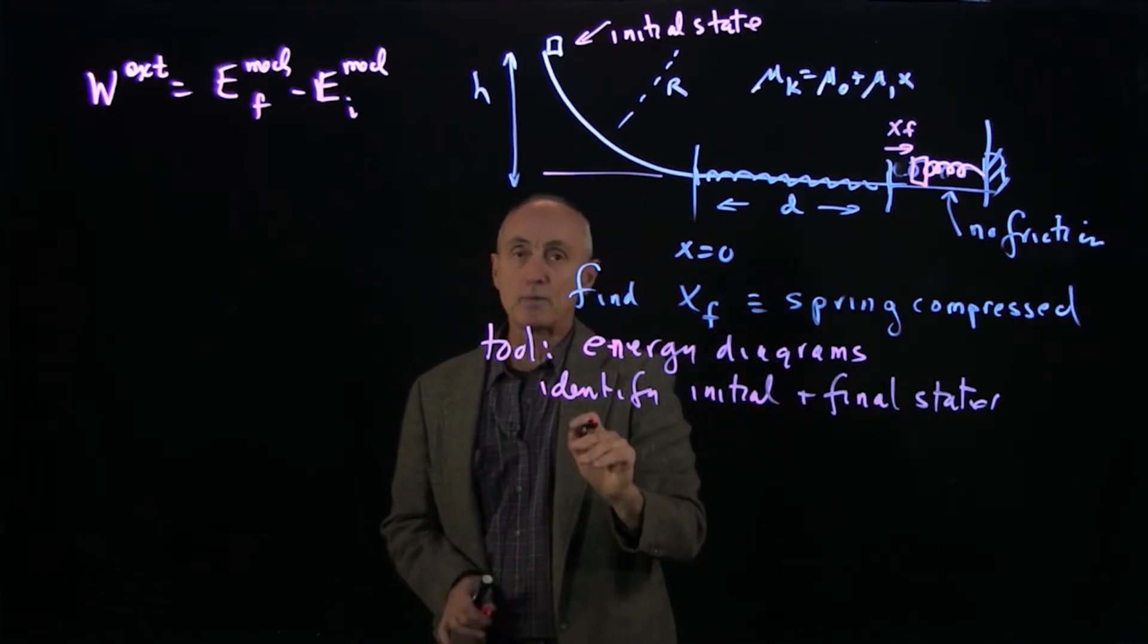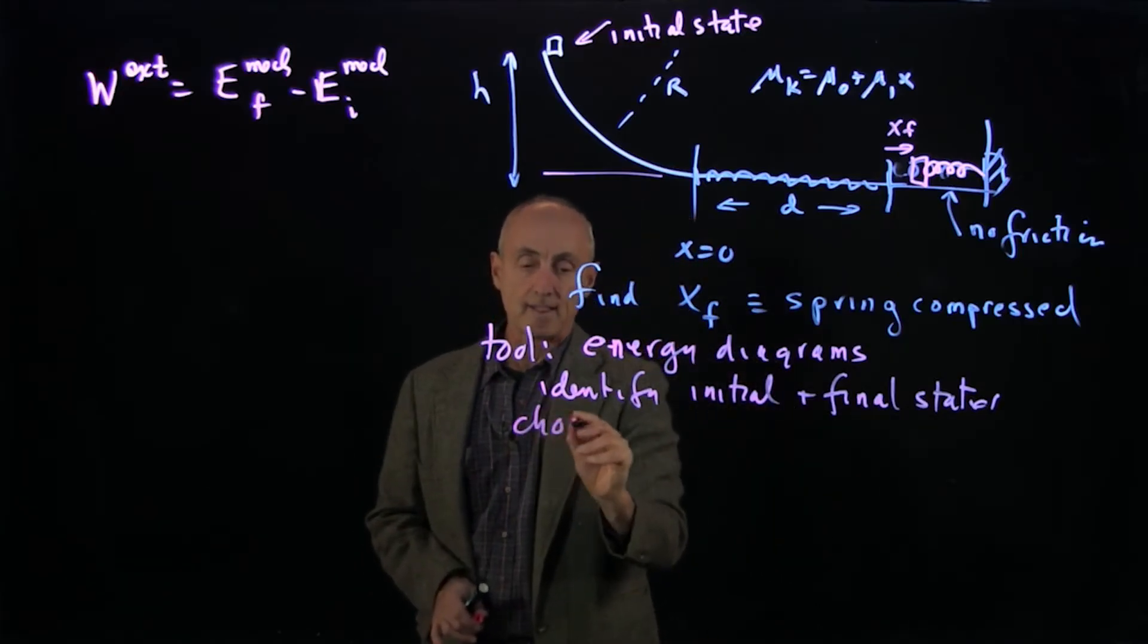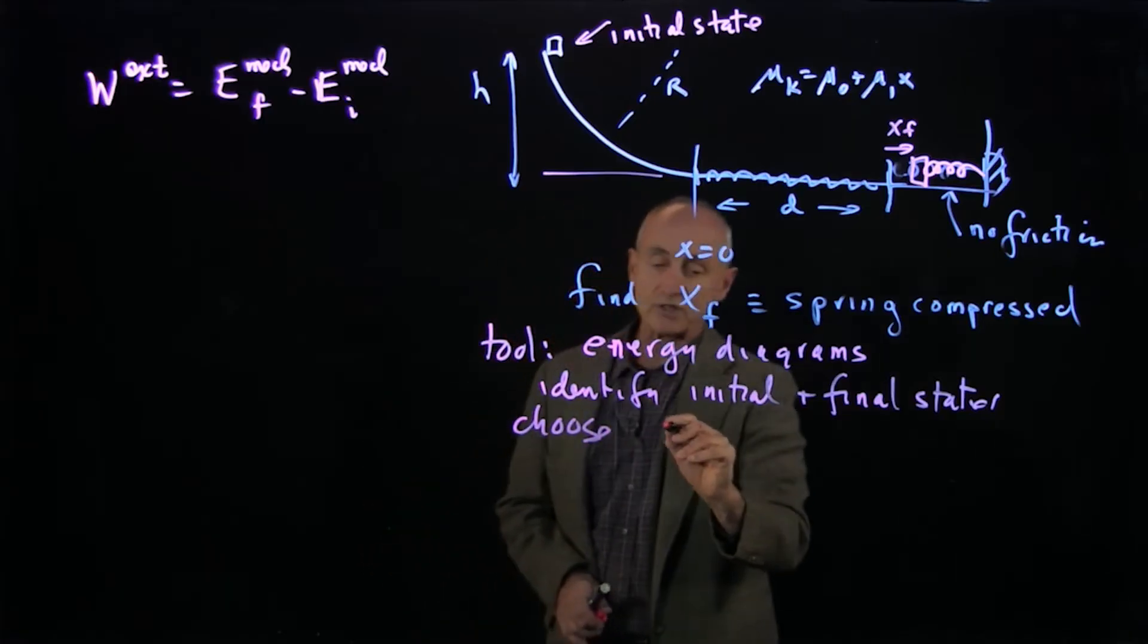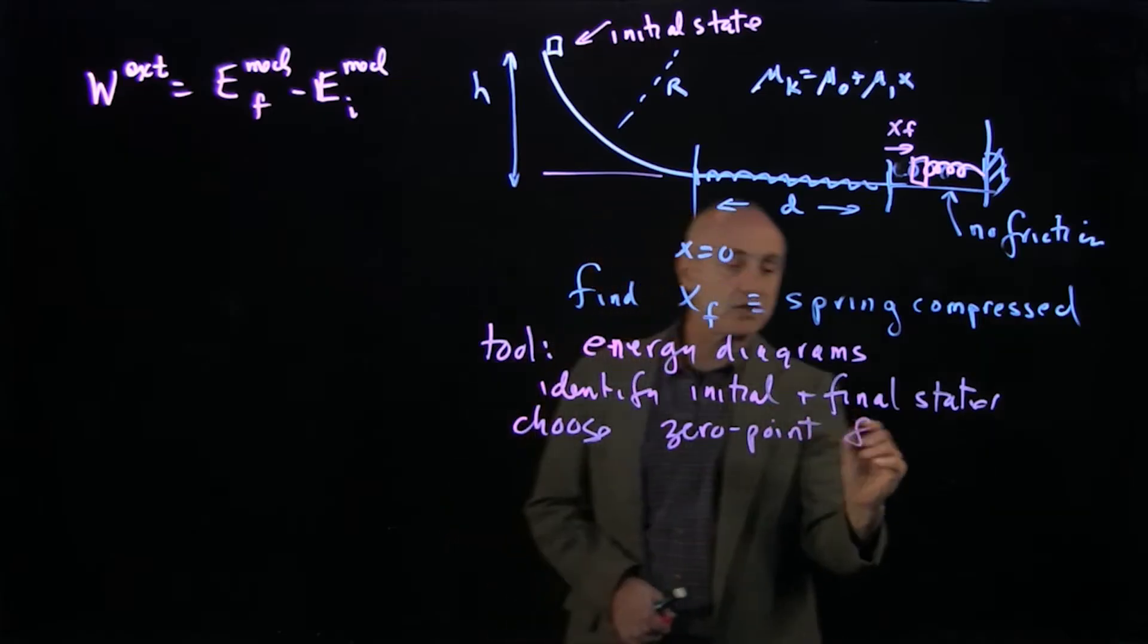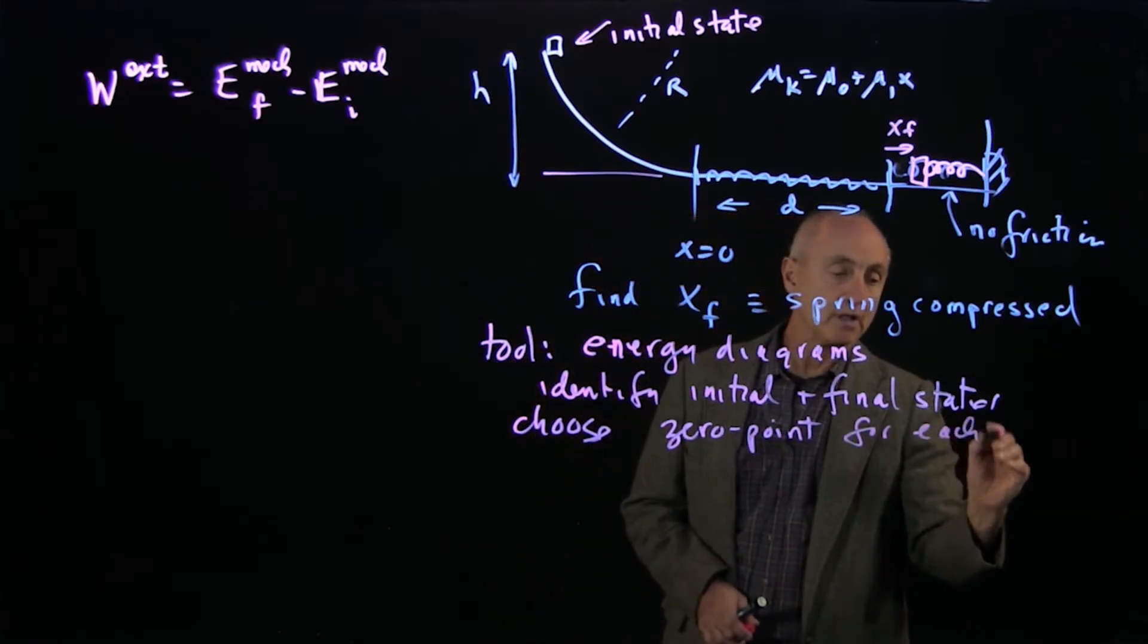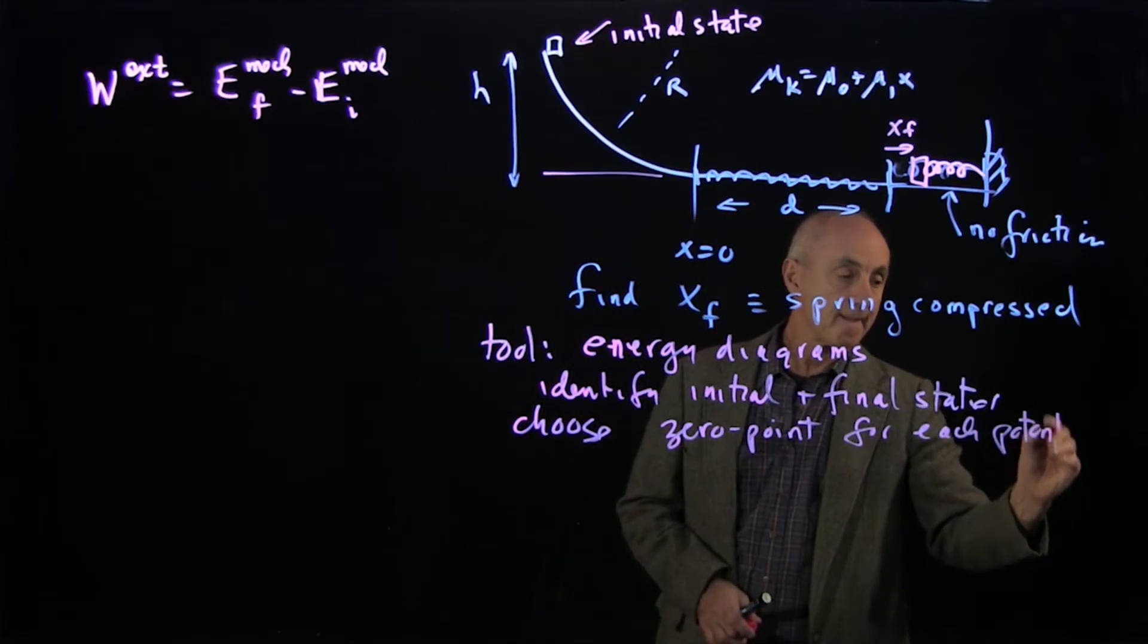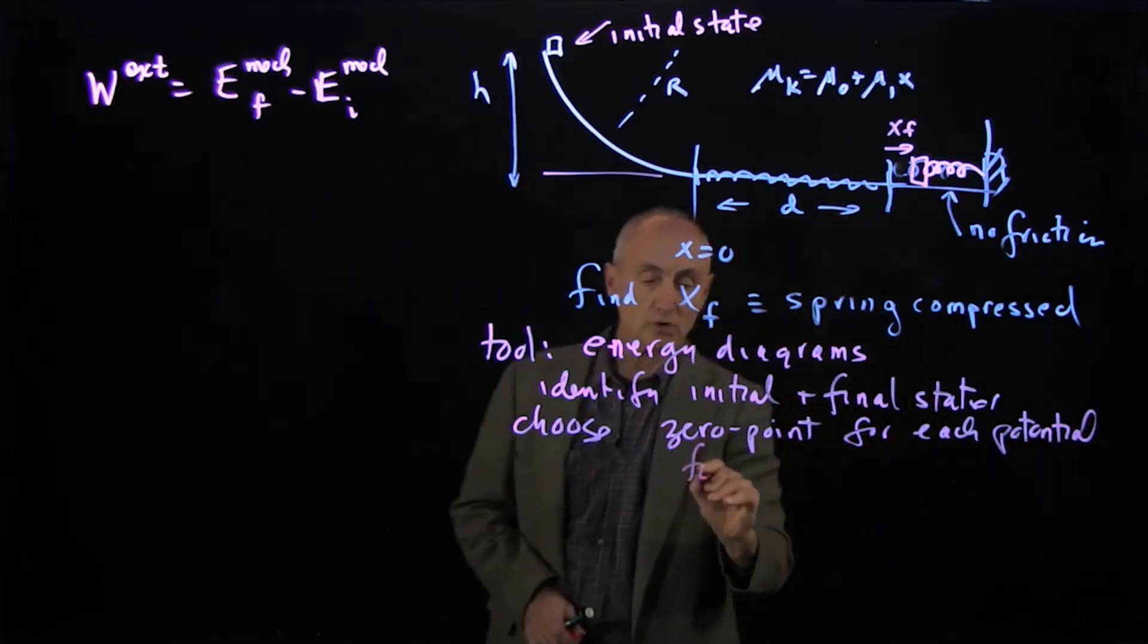And now what we want to do is choose reference points, zero points, zero point for each potential function, and show that on our diagram.